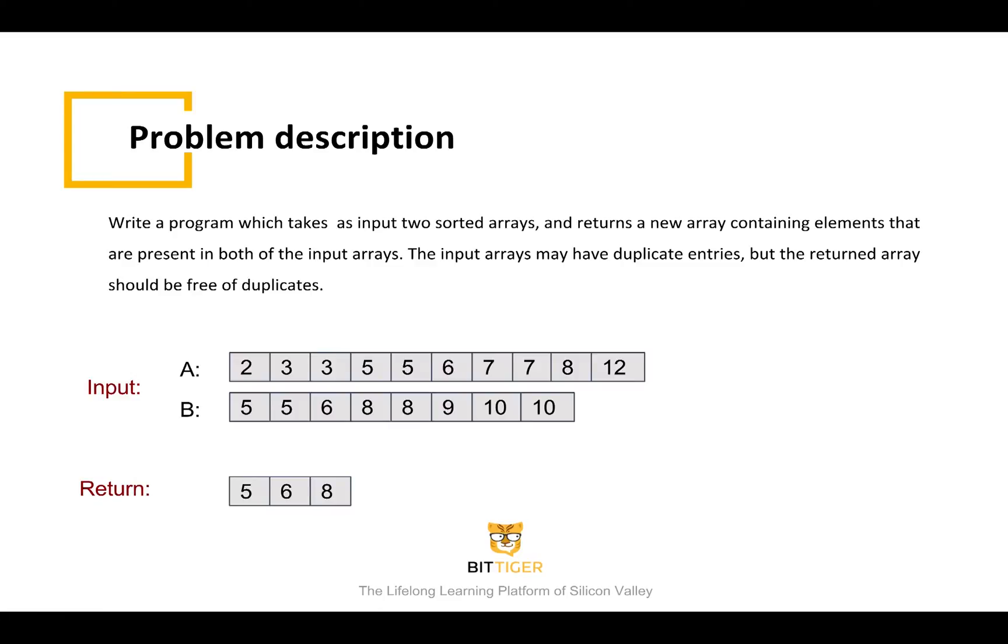We have two arrays, A and B, which are already sorted in ascending order. The purpose of this problem is to return a new array which only contains the elements that are present in both arrays A and B. We need to be careful since the input arrays may have duplicate elements, while the returned array should be duplicate free.